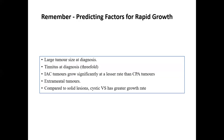When putting the patient on observation, you should identify predictive factors for repeat growth. Large tumor size at diagnosis may predispose to further growth. Tinnitus at diagnosis is associated with a three-fold increased risk. Intracanalicular tumors grow significantly more than CP angle tumors. Cystic lesions have a greater growth rate compared to solid lesions. If these criteria are not favorable, please consider any form of treatment.